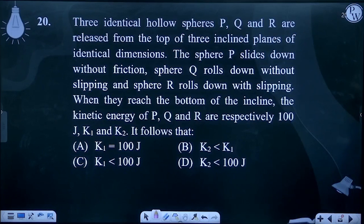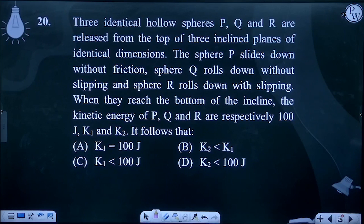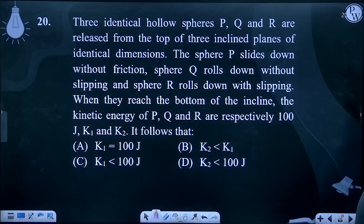Three identical hollow spheres P, Q and R are released from the top of three inclined planes of identical dimensions. Sphere P slides down without friction, sphere Q rolls down without slipping, and sphere R rolls down with slipping. When they reach the bottom of the incline, the kinetic energies of P, Q, R are respectively 100, K1, K2, 10.